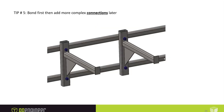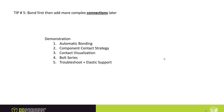Tip number five: for connections, bond first, then add more complex contacts and connections later on. In this brief demonstration I'll show automatic bonding, a component contact strategy, the contact visualization tool, using a bolt series, and troubleshooting when switching over to no-penetration contacts.